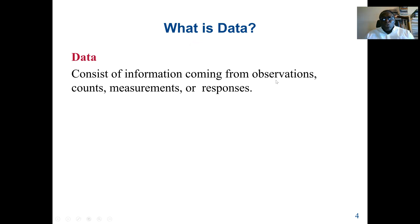An observation can be any entity. For example, data coming from a customer, a patient, a product. We also count - how many products we have in an inventory, or how many customers we serve today in a restaurant. Data can come from both counting or measurement - the height of a person, the weight of a person - or responses based on a survey. We give out a survey, we get a response back.